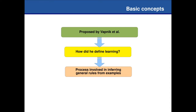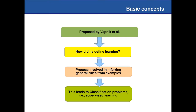Those general rules are inferred from data, from examples, from labeled examples. By labeled examples, I mean we have blood measurements and we also have the expected output for those particular subjects. In that scenario, we are trying to come up with general rules to classify if a given person has or doesn't have a disease. This leads to classification problems, to the supervised learning scenario.